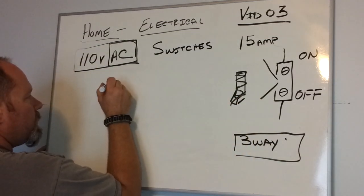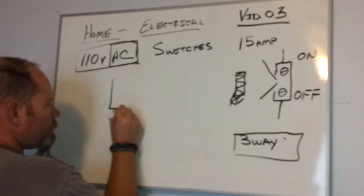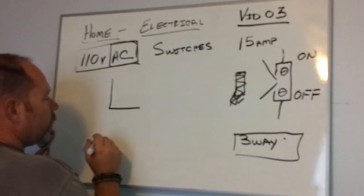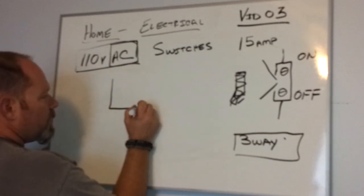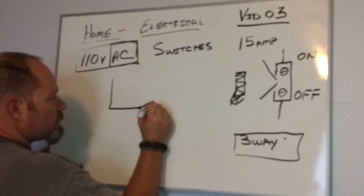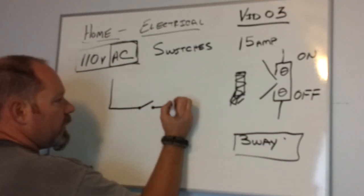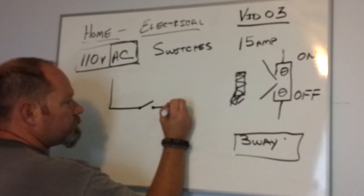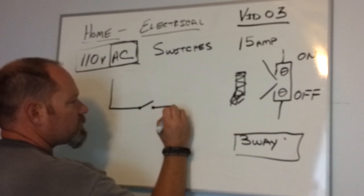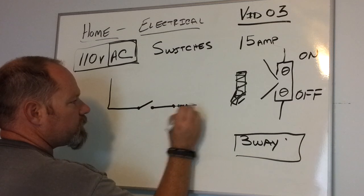I'm going to draw in a schematic. This is one wire. This little symbol here is an indication of a switch, and then we're going to draw our load. Loads can be motors, light bulbs, whatever. This would be a symbol for a load, because that would indicate some type of coil or resistance.